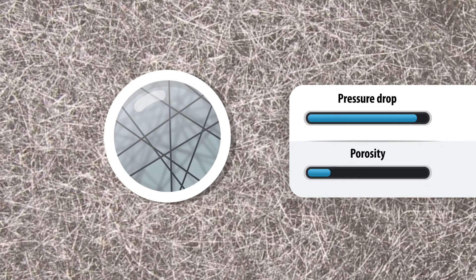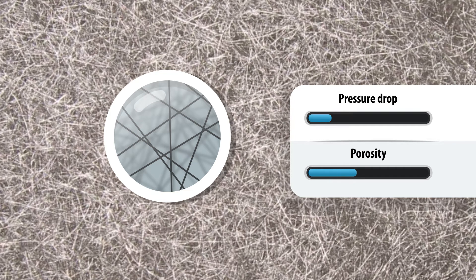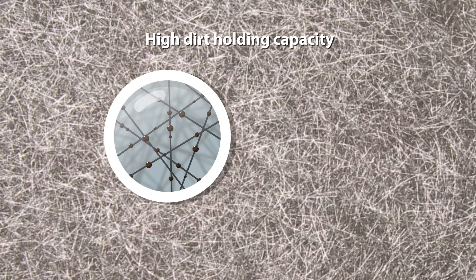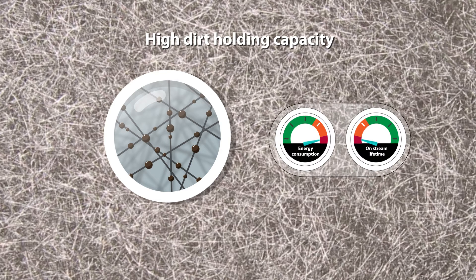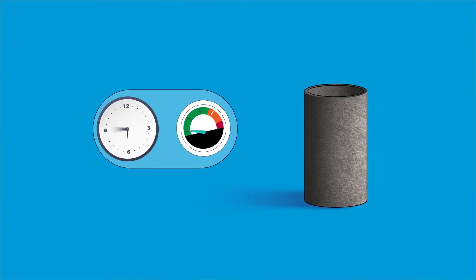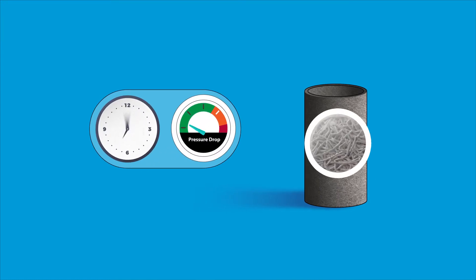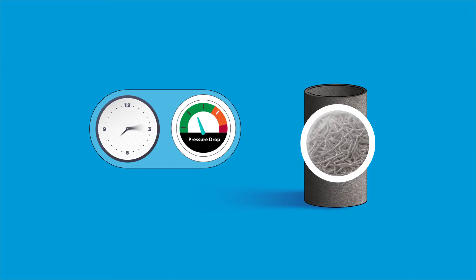Metal fiber media combines a low pressure drop with high porosity, which results in high dirt holding capacity, lower energy consumption, and a longer on-stream lifetime. This means your filter will be able to trap and hold a high level of contaminants before reaching the maximum allowable pressure drop.